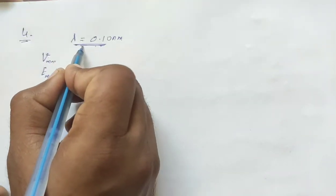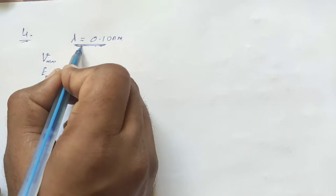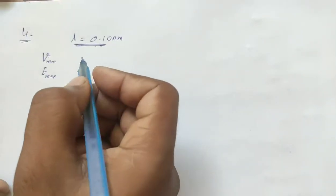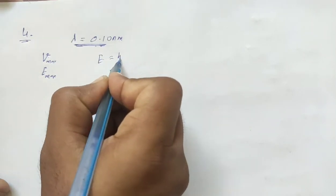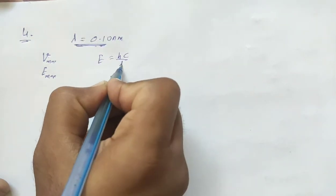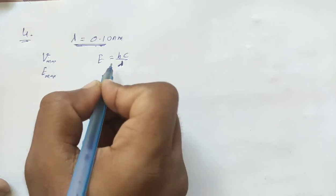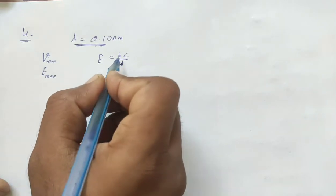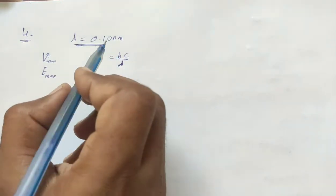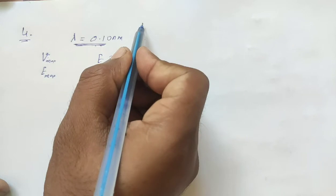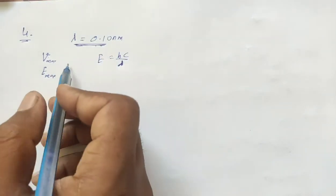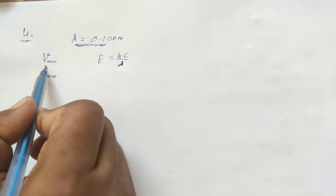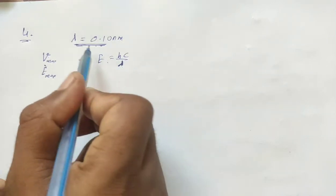The formula is: the energy of the photon from the X-ray equals hc/λ. This is the formula we will use. From the electron's potential, we can get this wavelength.